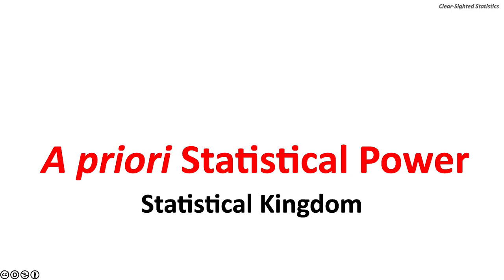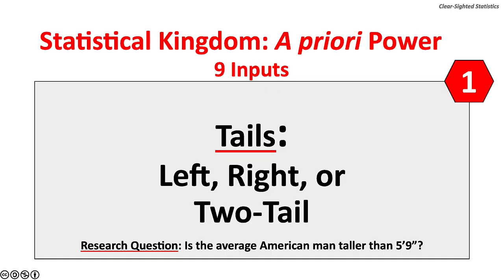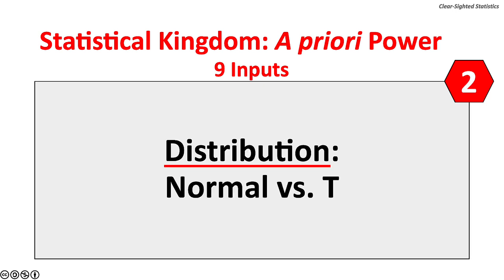The Statistics Kingdom calculator has nine inputs. Input 1 is Tails: left, right, or two-tail. Based on the research question — 'Is the average American man taller than 5'9'?' — this is a right-tail test, so select right. Input 2 is Distribution: normal or T. Enter normal because Z values will be used. Input 3 is Significance Level: enter 0.05 for the 5% significance level.